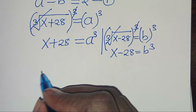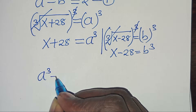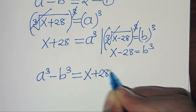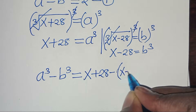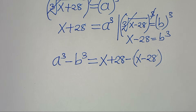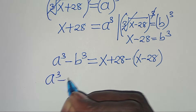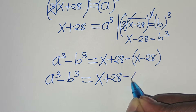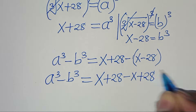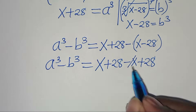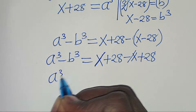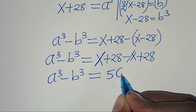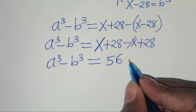This implies that a cubed minus b cubed equals (x plus 28) minus (x minus 28). The x terms cancel, giving us a cubed minus b cubed equals 28 plus 28, which equals 56. Let's call this equation 2.